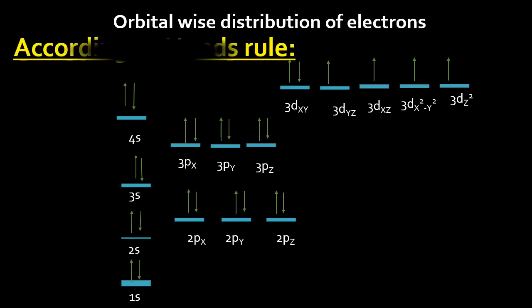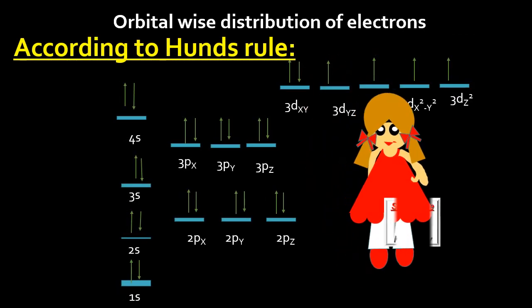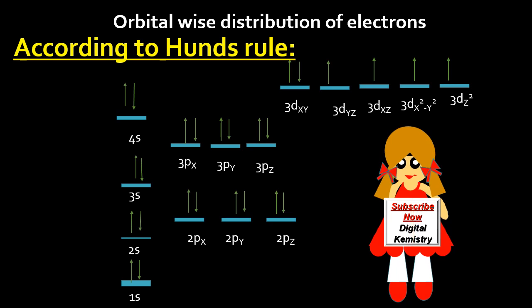So friends, let's start filling the electrons according to Hund's rule. First, fill the 1s orbital having the least energy. Here we fill 2 electrons with opposite spin, then 2s orbitals also having 2 electrons with opposite spin.